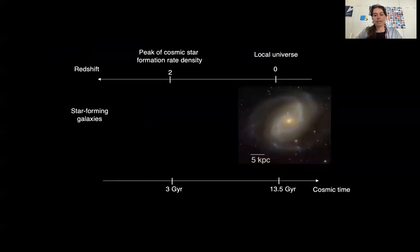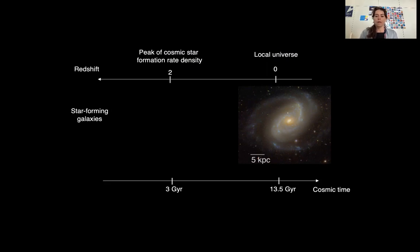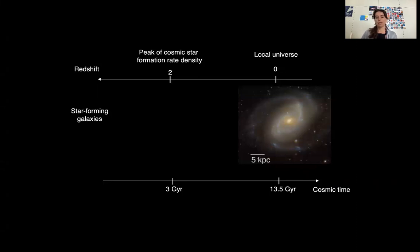Star-forming galaxies in the local universe typically have regular morphologies with spiral arms and a central bulge. They also have a relatively low gas fraction, between 5% and 10%, and they form most of their stars into giant molecular clouds that give rise to young massive clusters and star clusters, as we see in local Milky Way-like galaxies.